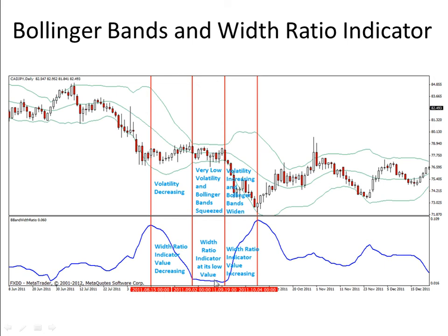This lowest value won't be zero. Even though the minimum possible value is zero, the Bollinger Bands Width Ratio indicator never becomes zero because this value is the difference between the upper band and the lower band, and since the upper band and lower band never touch each other, the indicator value never becomes zero.